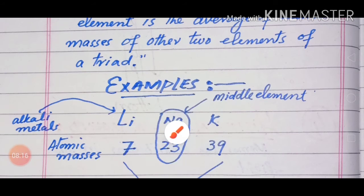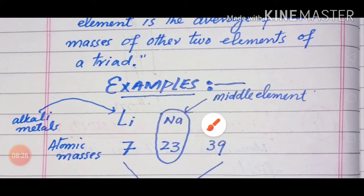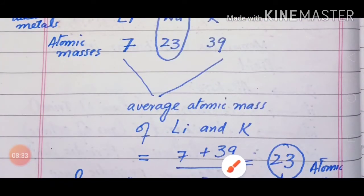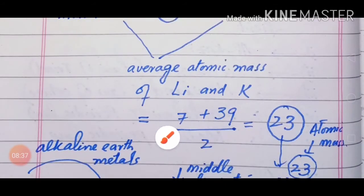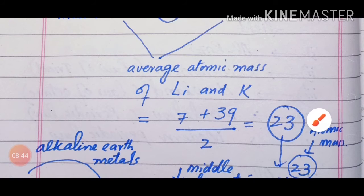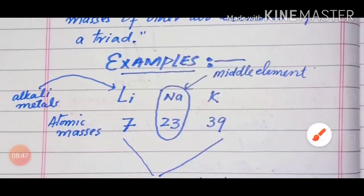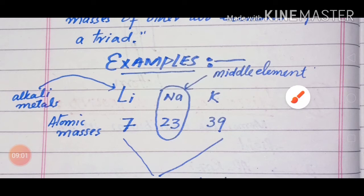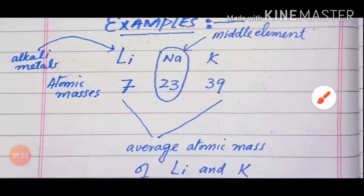For example, the alkali metals lithium, sodium, and potassium form a triad. Lithium's atomic mass is 7 and potassium's is 39. When you calculate the average: (7 + 39) ÷ 2 = 23, which is the atomic mass of sodium — the middle element. This confirms the Law of Triads.